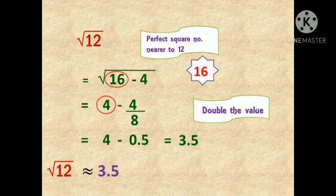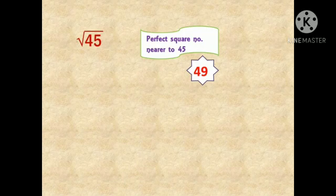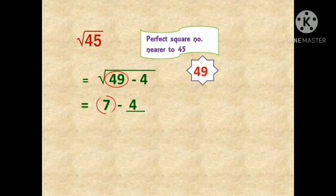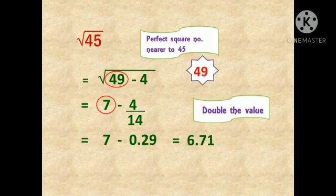Let us solve another example — we shall find the square root of 45. The first step is to find the perfect square number nearest to 45, which is 49, because 7 squared equals 49. Next, rewrite 45 as 49 minus 4. We find the square root of 49, which is 7. Then write minus 4 divided by double of 7, which is 14. The calculation: 7 minus 4/14 = 7 minus 0.29 = 6.71. So the approximate square root of 45 is 6.71.